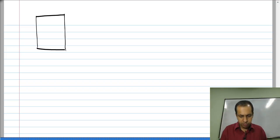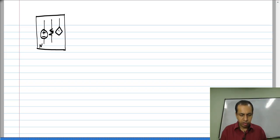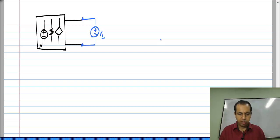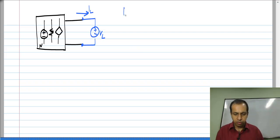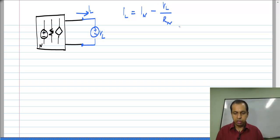Now let us apply superposition with the full circuit — that is, with the independent sources active and all components in place. If we apply V_L, we have a certain current I_L, and from the two cases we took for superposition, we know that I_L equals I_N, the short circuit current or the Norton current, minus V_L divided by R_N.